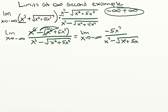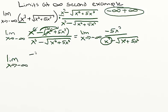What do we do next? We still have a form of infinity over infinity as x approaches negative infinity, so we're not quite done yet. We want to use our strategy of dividing by the largest power of x in the denominator, which in this case is x cubed. So we're going to rewrite this as the limit as x approaches negative infinity of negative 5x cubed divided by x cubed, with x cubed divided by x cubed in the denominator.